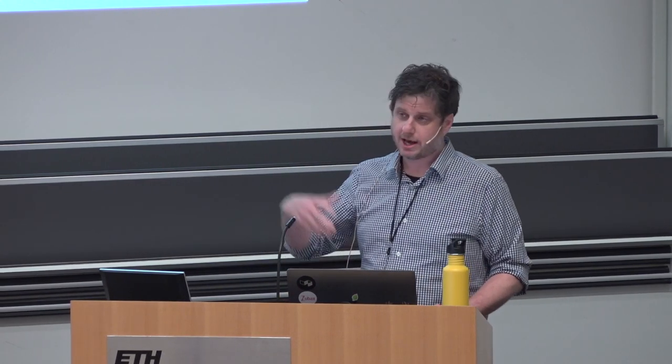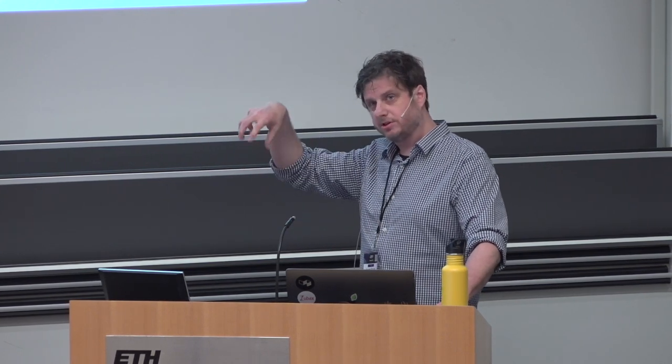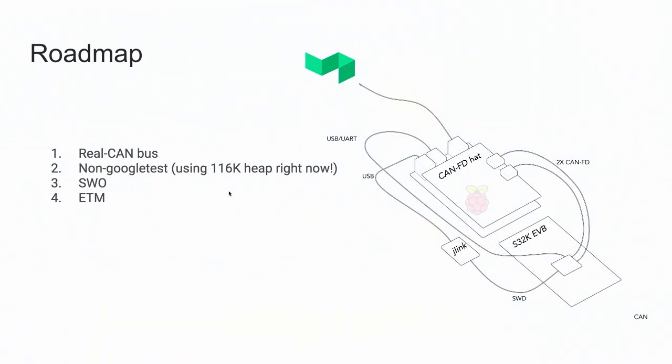And ETM debugging — I think David has a J-Trace — so we're going to use that as well, in order to capture which instructions were actually run as we rolled through the code on target, and put that on Coveralls so we get on-target coverage. And that can be important for some regulators: there are some DO-178 processes that say you must get credit for on-target testing, and we're going to have that capability. I also want to put a resource-constrained target in there — I want to make sure we're not blowing through a bunch of memory, so I'm probably going to have an M0 in there at some point.